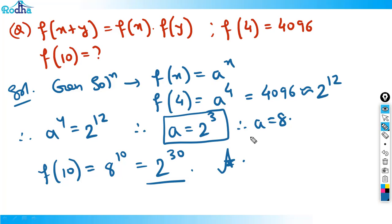You can easily prove these on your own. If you remember these five kinds of equations it's quite simple. Otherwise, plug in some values like x=1, y=1, then x=2, y=1, observe the pattern, and you'll see f(x) = aˣ or whatever applies. Let's continue in the next video. Thank you for watching.